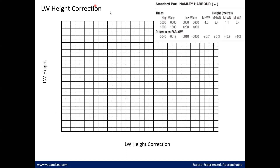Then we switch our attention to the low water information. Low water heights at Namli: 1.1 and 0.4, with corrections ranging from 0.7 down to 0.2. There was a note that 0.4 was omitted from the display but is still marked in the right place. Drawing across at the low water height of 0.6 and down, the correction comes out somewhere between 0.4 and 0.3 — closer to 0.3. So the low water correction is plus 0.3 metres.